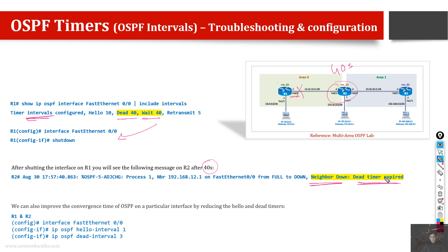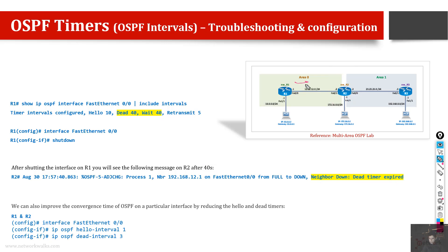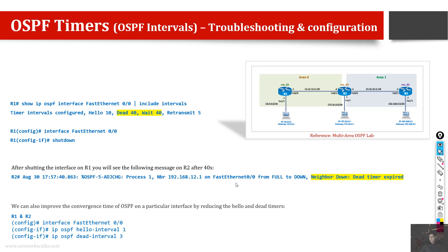We can also improve convergence by modifying these timers — that is why they are configurable. For example, in a banking application running on your network, you cannot afford to wait 10 seconds for OSPF to declare a neighbor down. You can configure the hello interval to 1 second and the dead interval to 3 seconds, so routes are removed much faster. Conversely, if the network is flapping frequently, you can increase the dead and hello intervals to slow things down and reduce instability. You can modify them according to your requirements.